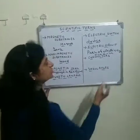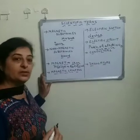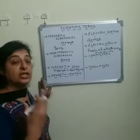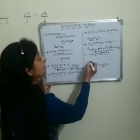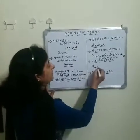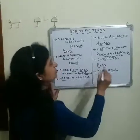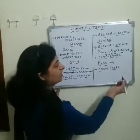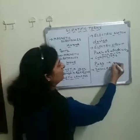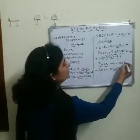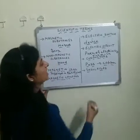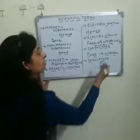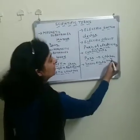Now, conductors and insulators. Conductors are those substances which allow electricity to pass through them. Those substances through which electricity can pass are known as conductors. For example, copper and aluminium are conductors. The human body is also a conductor of electricity, and water is a conductor of electricity.